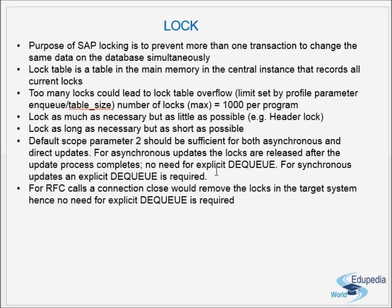For synchronous updates, the enqueue should be accompanied by a dequeue. For RFC calls, a connection close would remove the locks in the target system, so no explicit dequeue is required. When the RFC connection is closed, locks in the target system are automatically released. Developers have to take care about enqueuing and dequeuing properly, and ensure every enqueue has a corresponding dequeue when required.